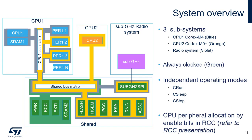The STM32WL5 system contains three subsystems: the CPU1 Cortex-M4, the CPU2 Cortex-M0+, and the sub-gigahertz radio subsystem. Each of the three subsystems can operate independently, being in one of its operating modes — C-Run, C-Sleep, or C-Stop. Peripherals will only be clocked when the associated subsystem is in C-Run mode, or C-Sleep when enabled in sleep mode.